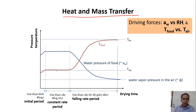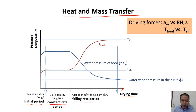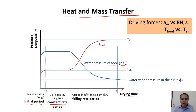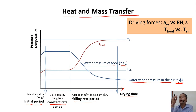The three periods are: initial, constant rate, and falling rate. This blue curve represents the water activity of food under drying air. The drying air also has a water vapor pressure, and that is represented by the relative humidity of the air.